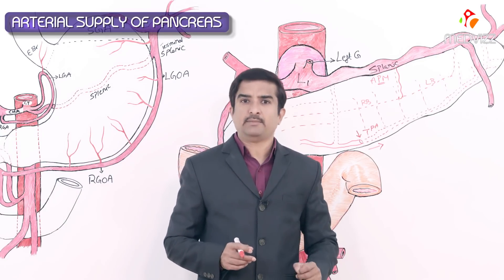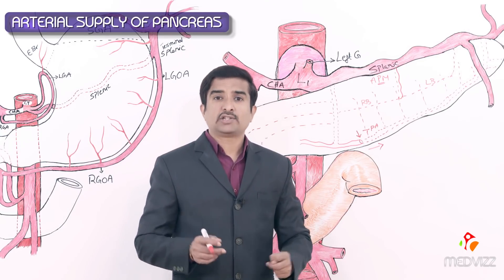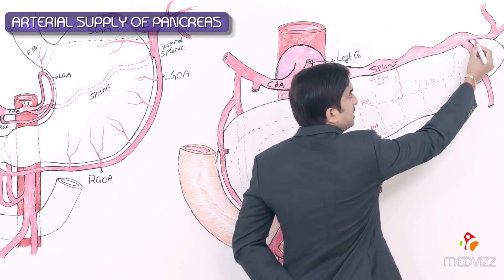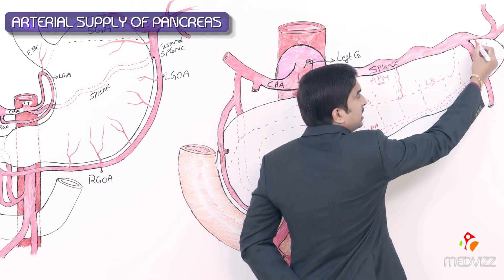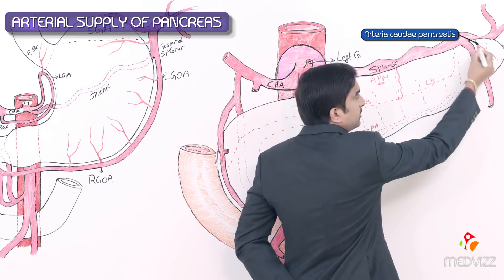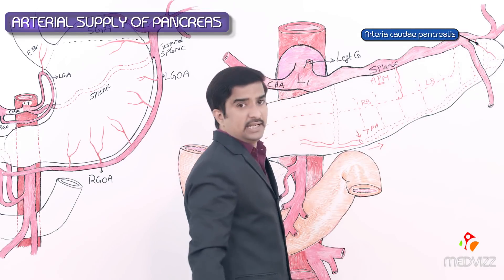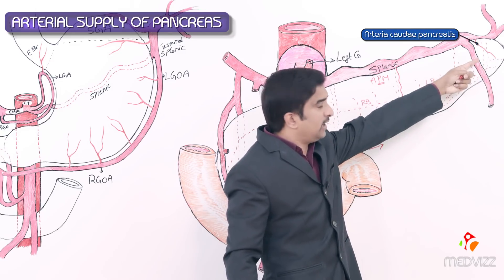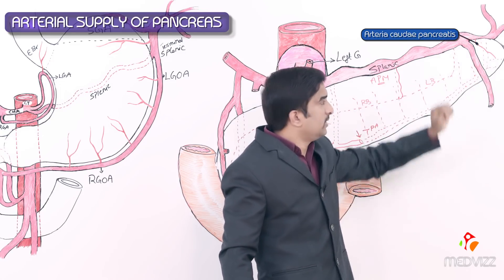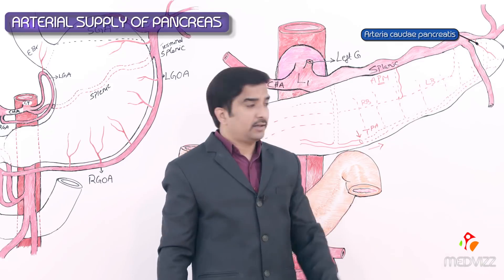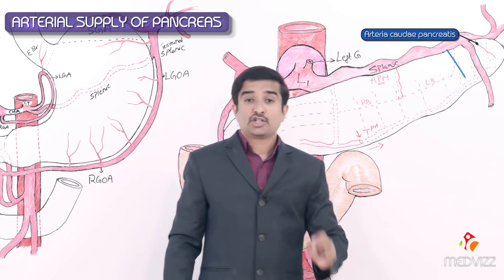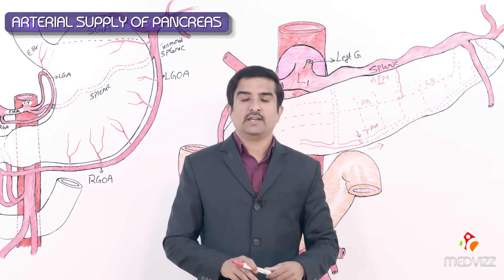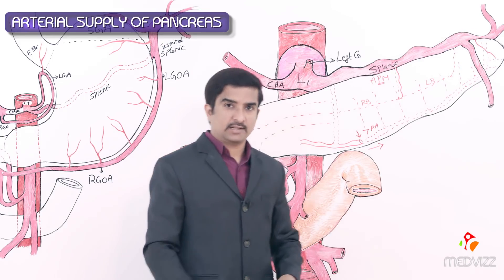In some individuals, a caudal pancreatic artery can also be seen, arising from the terminal part of the splenic artery and giving important blood supply specifically to the tail of the pancreas.